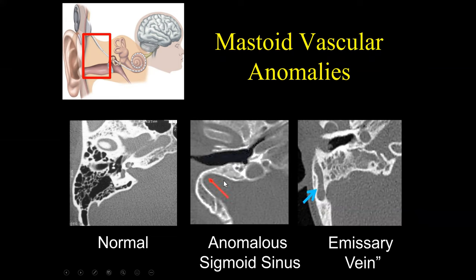We also need to evaluate the sigmoid sinus. As surgeons are drilling from outside in, they cannot detect vascular anomalies, and the last thing they want to do is drill into a vascular structure. An anomalous sigmoid sinus needs to be commented on in our report. Any emissary veins located just below the cortex of the mastoid air cells also need to be mentioned, because we have the imaging ability to identify these structures that the surgeons cannot see directly.